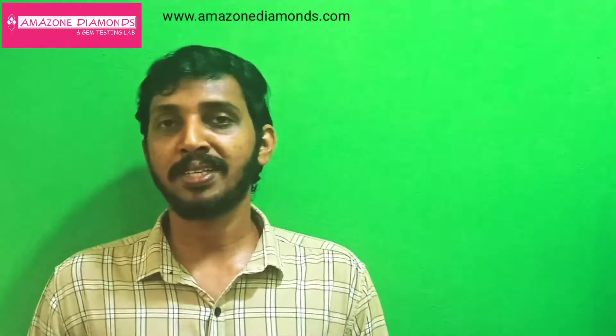When impurity elements like boron and nitrogen are present in the crystal lattice, diamonds will exhibit some colors like yellow and brown. Sometimes very rarely, fancy colors like blue, pink, purple, orange, green, red, etc. will be exhibited by diamonds.